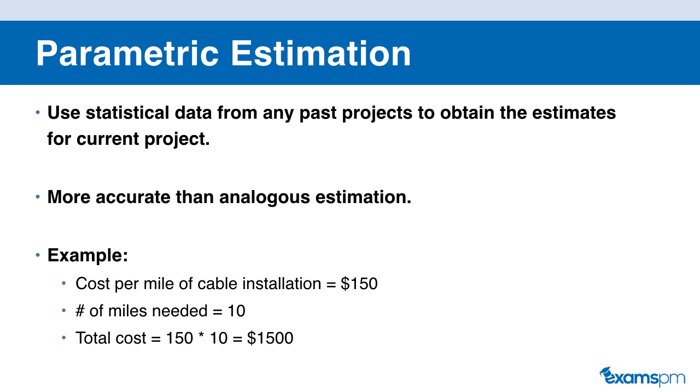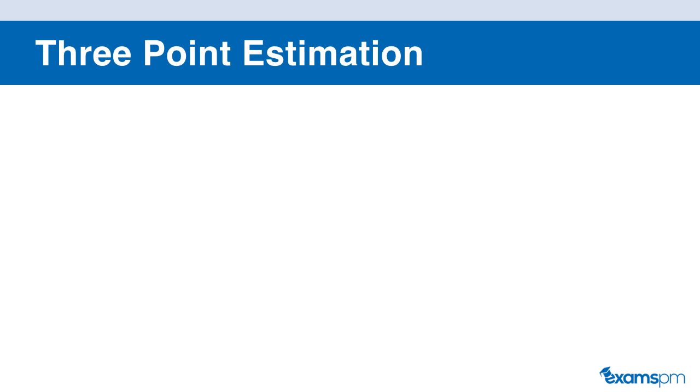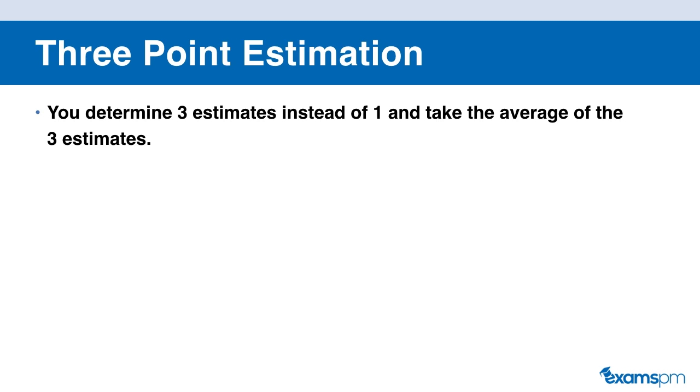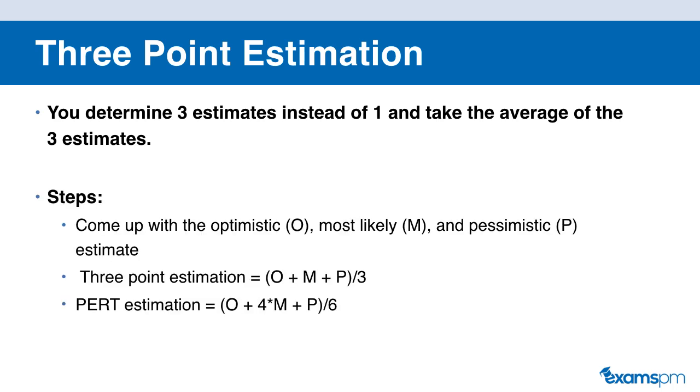Now let's move on to our third type of estimation, which is our three-point estimation. So like its name suggests, what you're doing in three-point estimation is that you're determining three points instead of one and taking the average of those three points in order to come up with your cost or your schedule estimations. So here's the exact steps to coming up with your estimation. The first step is to come up with an optimistic estimation. The second step is to come up with a most likely estimation. And third, a pessimistic estimation. And if the question is asking for this three-point estimation, what you're going to do is add up your optimistic plus your most likely plus your pessimistic and divide it by three.